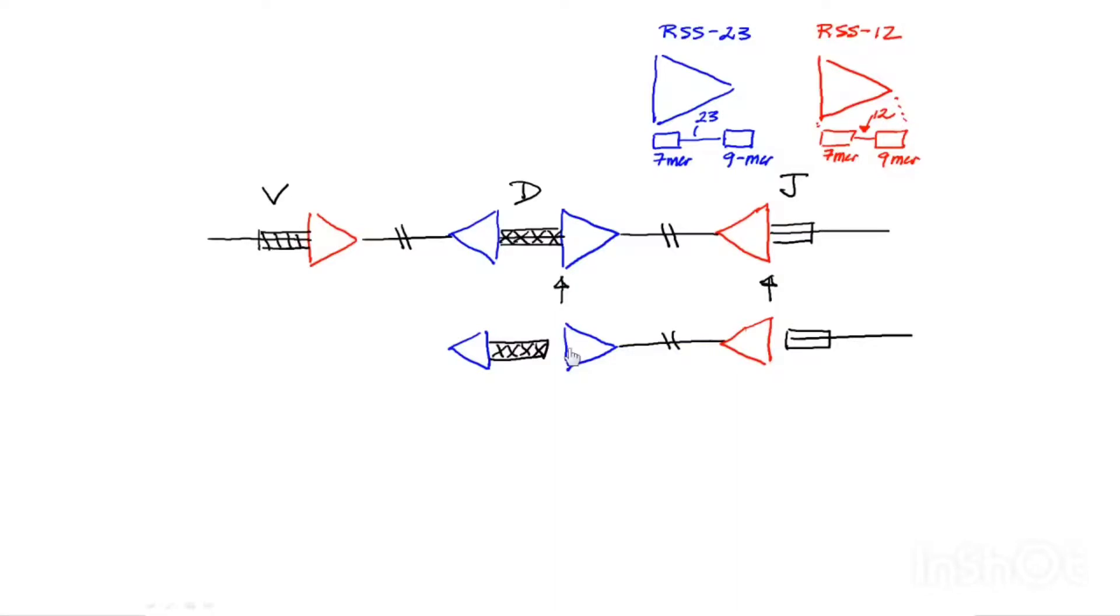And what happens now is that the non-homologous end joining proteins, I'll draw an arrow here for you. The non-homologous end joining proteins will take these ends and join them in a way that recombines the genome. And they're going to only join them in a particular order.